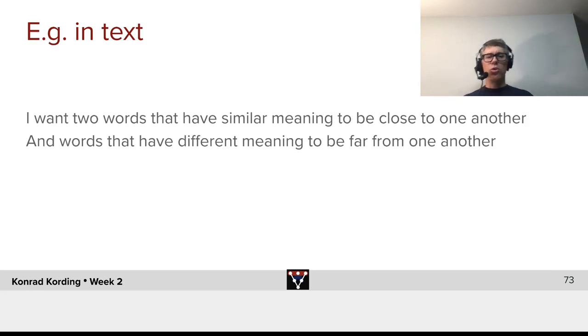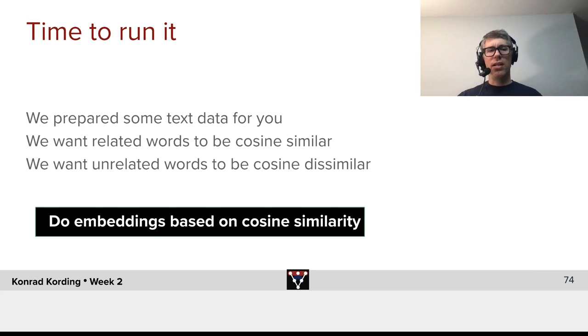So, the idea is I want two words that have similar meaning to be close to one another in some embedding space, and words that have different meaning to be far away from one another.